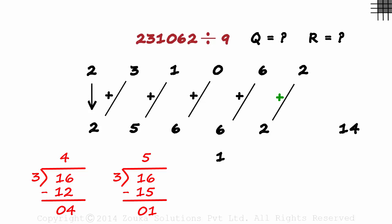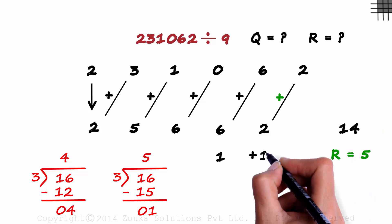So all we need to do now is remove a 9 from this and add 1 to the quotient. Removing 9 from this gives us a remainder of 5, and we add 1 to the quotient.